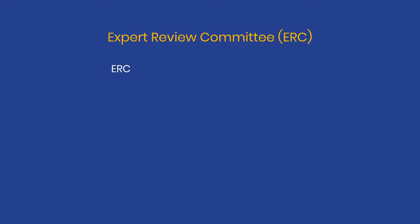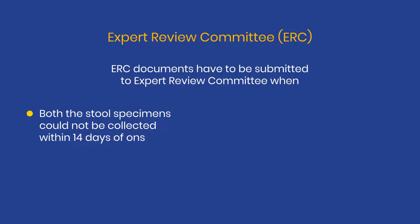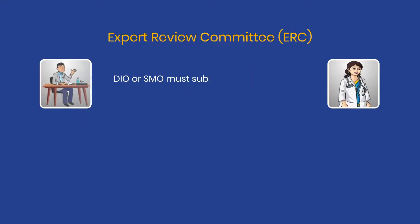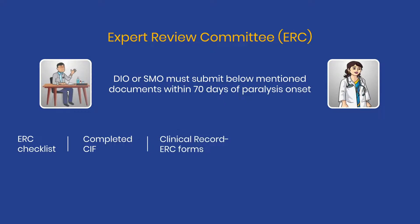ERC documents have to be submitted to the Expert Review Committee when both stool specimens could not be collected within 14 days of onset of paralysis — that is, an inadequate AFP case — or when there is isolation of polio virus in the stool specimen. The DIO or SMO must submit the required documents within 70 days of paralysis onset. These include the ERC checklist, completed CIF, clinical record, ERC forms, 60-day follow-up status, and photos and videos of the case.